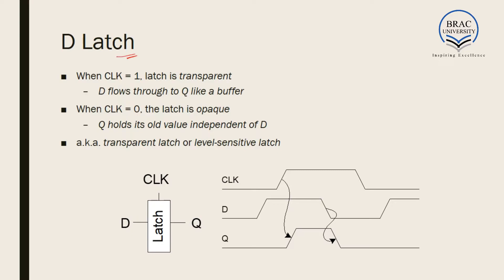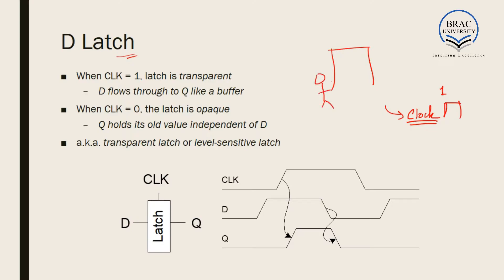If we consider metaphorically, our D latch can be considered as a gate — an automatic gate controlled with a clock. When the clock is high, that is when the clock is one, the gate is open and the man can enter through the gate. If the clock is low, the gate is closed and the man can no longer enter or leave.